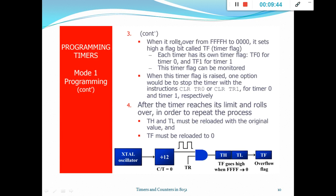When the counter rolls over from 0xFFFF to 0x00, it directly rolls over from the final count to the initial count, and sets a flag bit called the timer flag. Each timer has its own timer flag — TF0 for timer 0 and TF1 for timer 1. The same timer flag is not shared between two different timers.